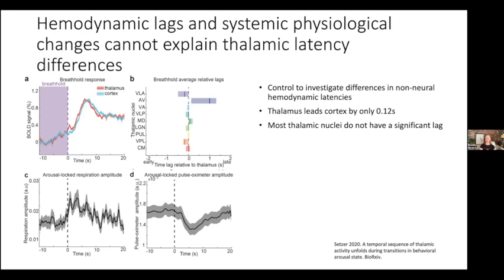We also examined systemic physiology, since when someone falls asleep there are big changes in respiration and heart rate that can affect the BOLD signal. We looked at average respiration amplitude and pulse oximeter amplitude and saw a significant change — confirming this is an arousal state transition — but it occurred after or at the transition, rather than before. This told us the activation sequence across thalamic nuclei that we see before behavioral arousal is not due to these systemic changes.